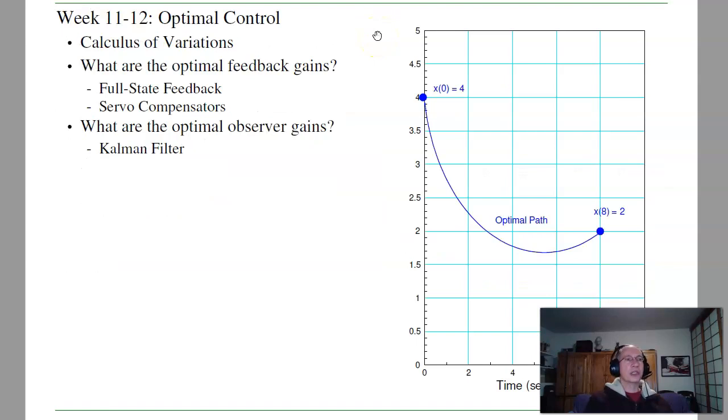Once that's done, we'll look at optimal control. The problem with pole placement is I can place all the poles anywhere I want. That's the strength. That's also the weakness. If I don't really know where the poles belong, I'm kind of at a loss. What optimal control does is it says I define a cost function. I want to go from point A to point B while minimizing the input. What's the optimal path? Or conversely, what are the optimal feedback gains?